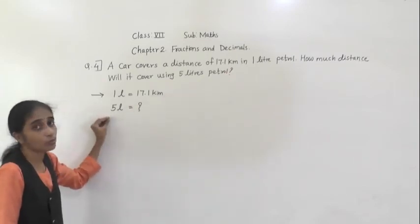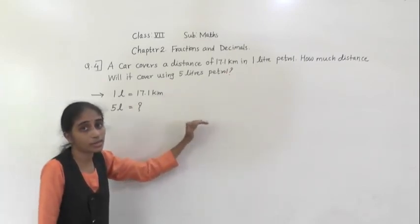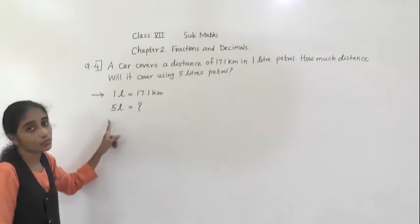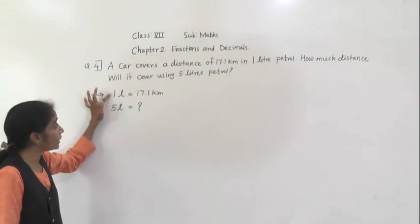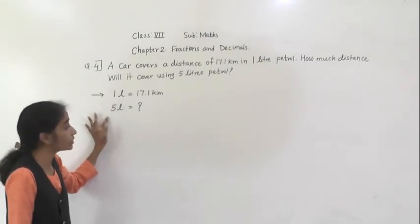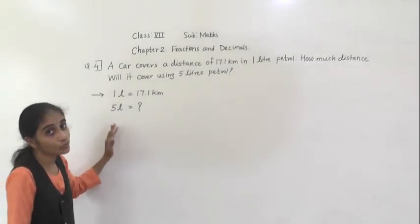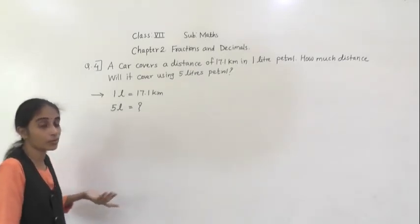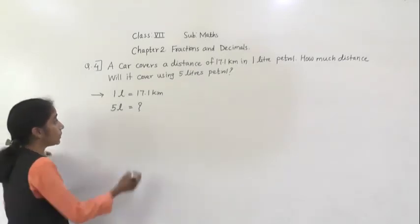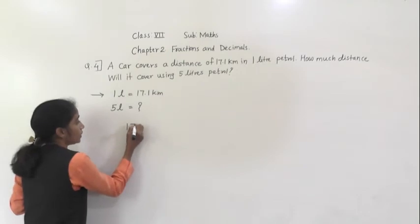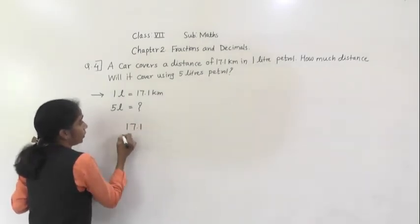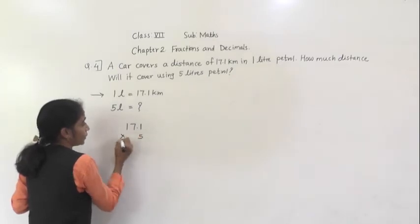Using 5 litres of petrol, how much distance covered by car? It is given for 1 litre and asking for many — given for 1 litre, asked for 5 litres. So what we have to do? We have to multiply it. If given for 1 and asking for many, then we multiply. So multiply: 17.1 multiplied by 5.